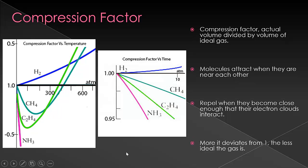What this compression factor actually is is it's the actual volume, if you were to measure it, divided by the volume of what an ideal gas would be. Molecules are going to attract each other when they are near to each other. So, when they're close, they start to interact with each other, they start attracting each other. Now, if they become really, really close, and so close that now the electron clouds are starting to interact, now they start repelling each other. They start pushing away from each other because those two electron clouds don't really want to bump into each other. So, that's why we get these different patterns here.